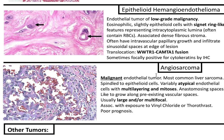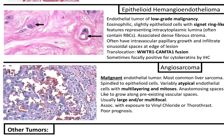Epithelioid hemangioendothelioma. This is an endothelial tumor of low-grade malignancy. You'll have eosinophilic, slightly epithelioid cells with signet ring-like features representing intracytoplasmic lumina, which can often contain red blood cells — some call these blister cells. It's associated with a dense fibrous stroma, with intravascular papillary growth and infiltrative sinusoidal spaces at the edge of the lesion. It has a characteristic WWTR1-CAMTA1 fusion, and is sometimes focally positive for cytokeratins, hence the term epithelioid.